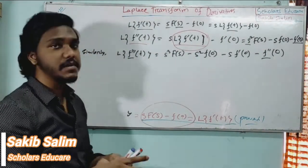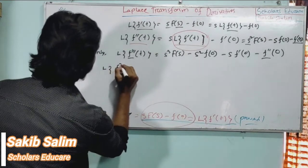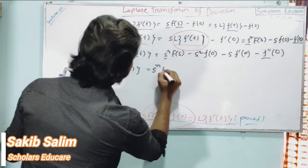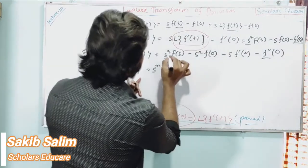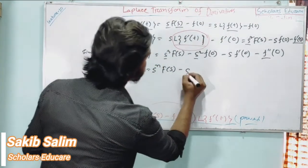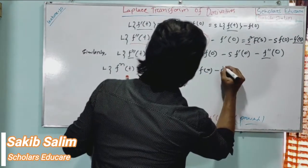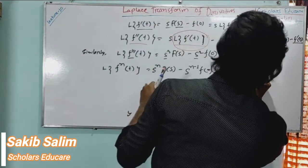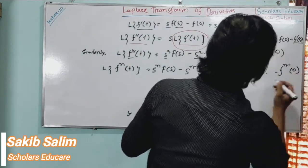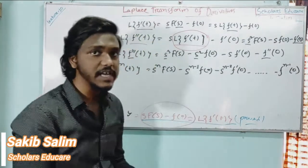The Laplace Transform of the nth derivative of f(t) equals sⁿ·F(s) minus s^(n-1)·f(0) minus s^(n-2)·f'(0), then continuing, dot dot dot, minus f^(n-1)(0). So we can do n times derivative and write it in a similar process. We can prove and follow the Laplace Transform derivative properties.